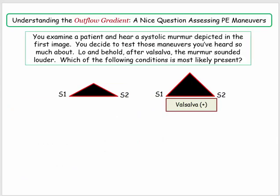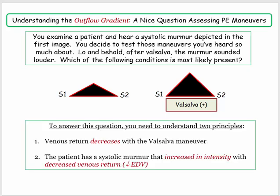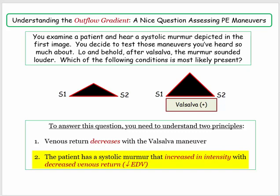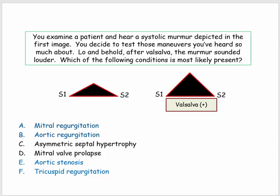Here they are still testing your understanding of the dynamic outflow gradient. In the first graphic, we see a mid-systolic murmur; in the second, the Valsalva maneuver is performed and the murmur increases in intensity. To answer this question correctly, you need to understand two principles: one, venous return decreases with a Valsalva maneuver; and two, which disorders are associated with increased murmur intensity when venous return decreases? Mitral regurg, aortic regurg, aortic stenosis, and tricuspid regurg are all volume-dependent and would decrease in intensity — leaving choices C and D.